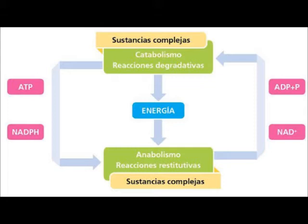Then we have the second category: anabolic routes — anabolism — which is the biosynthetic phase in which small, simple precursors are transformed into more complex molecules such as lipids, polysaccharides, proteins, and nucleic acids. Anabolic reactions require an input of energy — they do not release it like catabolism. That energy is generally in the form of ATP and reducing power (FADH2, NADPH, NADH). Anabolic routes are divergent. It's like the yin and the yang — both have common parts but are two sides of the same coin that complement each other.